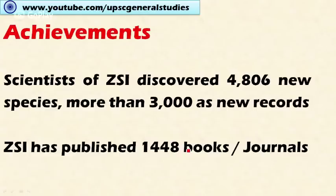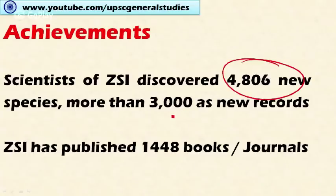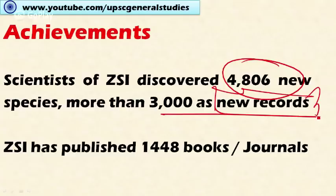The scientists of the Zoological Survey of India have discovered 4,806 new animal species and more than 3,000 new records not previously listed in any documents — all new to science. They have also published a large collection of books related to the conservation of fauna, with up to 1,448 books published by the Zoological Survey of India.